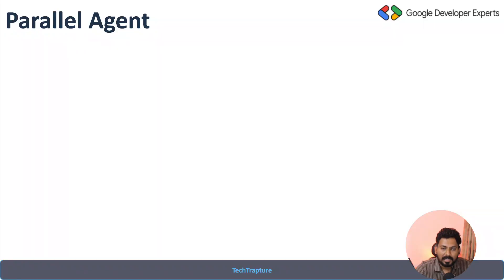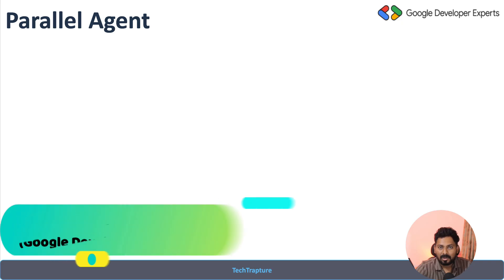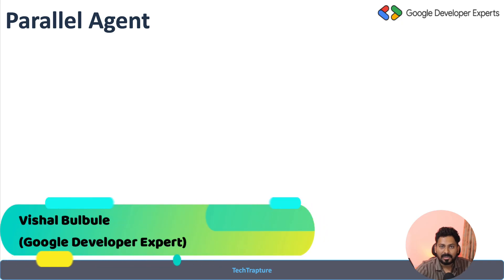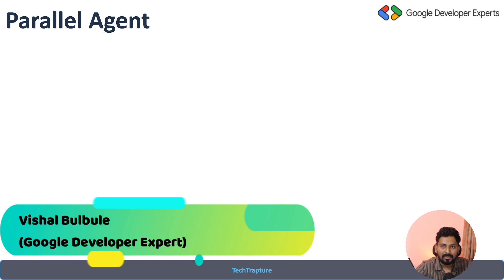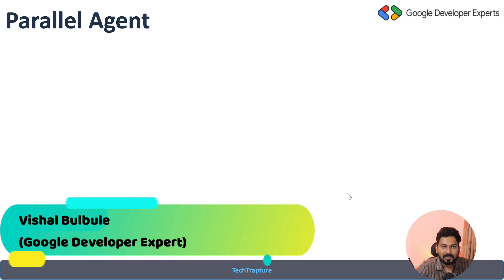Hello all, welcome back. In this video we are going to create a multi-agent system for content creation. In the last video we used a job assistant agent using the sequential agent in the ADK. Now we are exploring the parallel agent, where we'll create a multi-agent system for content creation.